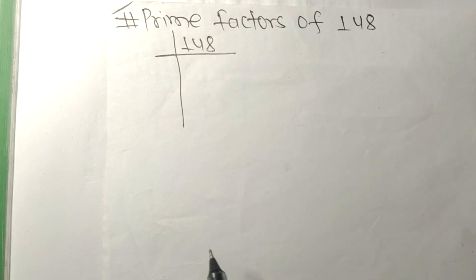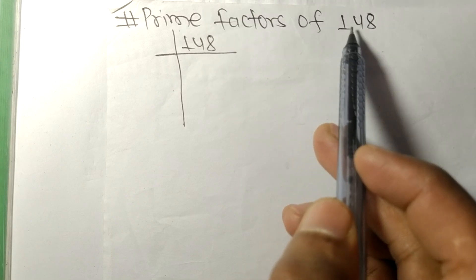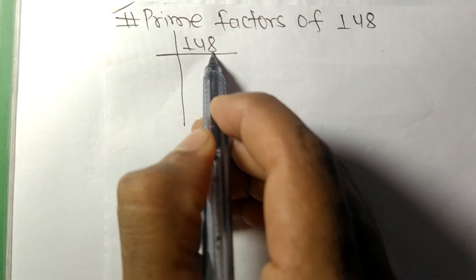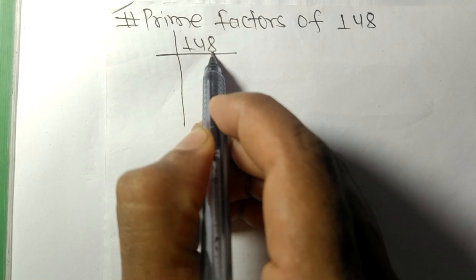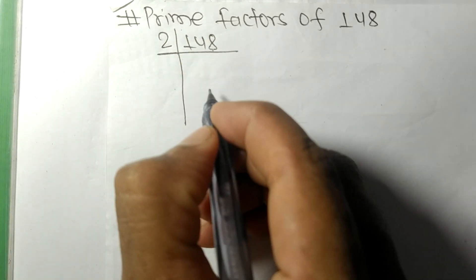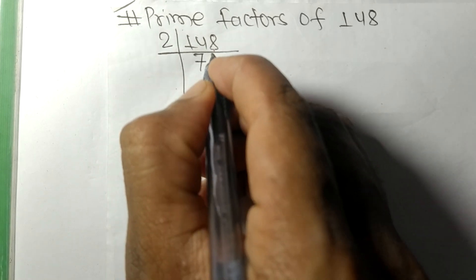Today in this video we shall learn to find the prime factors of 148. It contains 8, an even number, so this whole number is divisible by 2. 2 times 7 is 14, and 2 times 4 is 8.